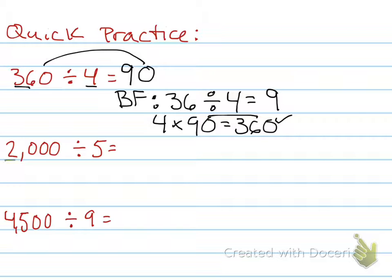Well, I don't want to do two divided by five. That wouldn't work. Let's do 20 divided by five. Five times what gives me 20? Four. So, it'd be four.